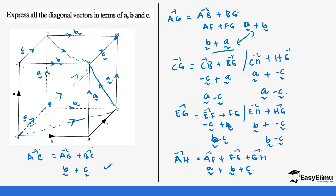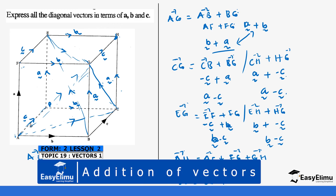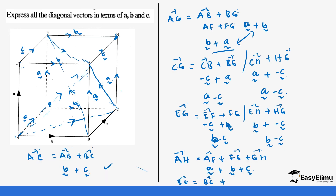Here we pick the last diagonal: from B to E. We move from B to G, then G to F, then F to E. BG is A, GF is B, and FE is C. So diagonal BE equals A plus B plus C. You can see how we are able to add these vectors along any diagonal path of the cube.